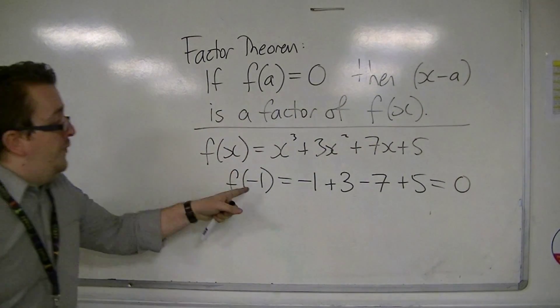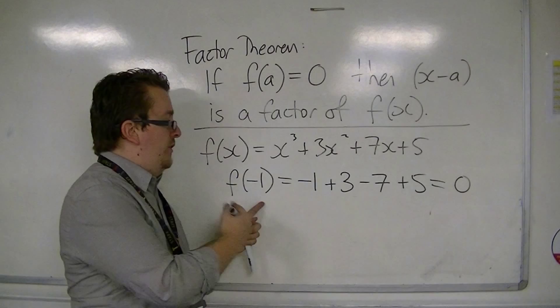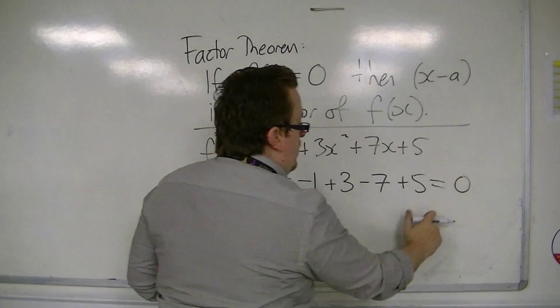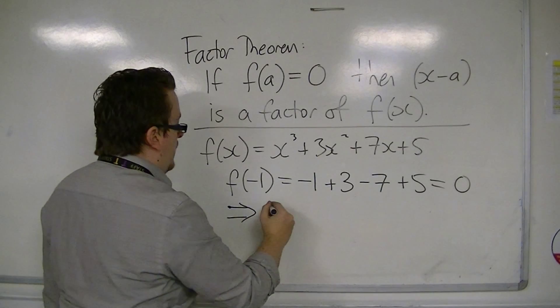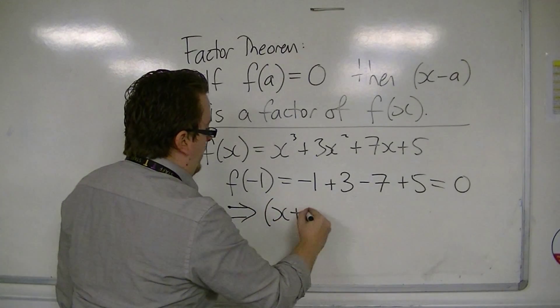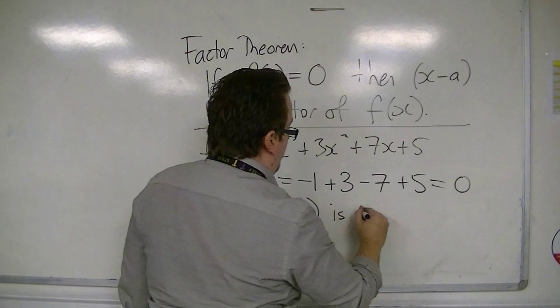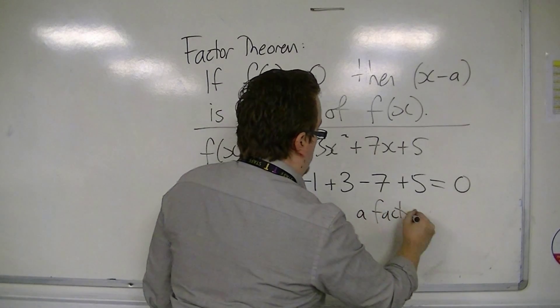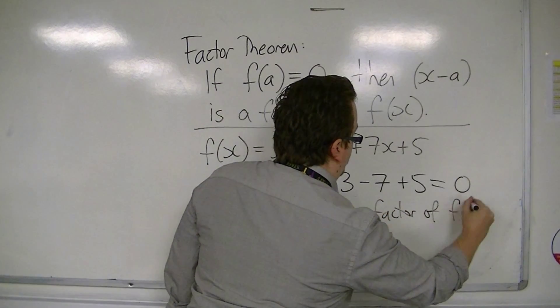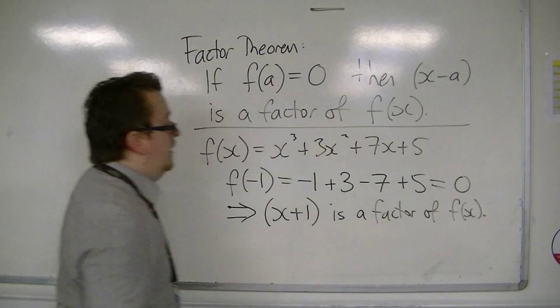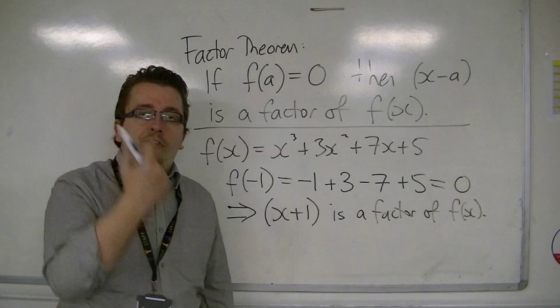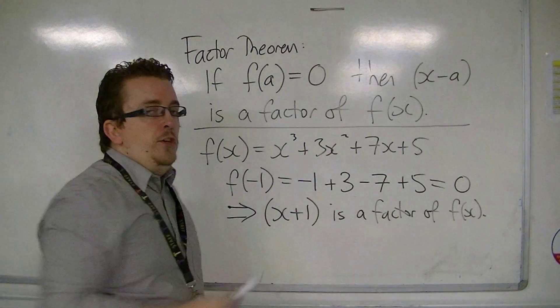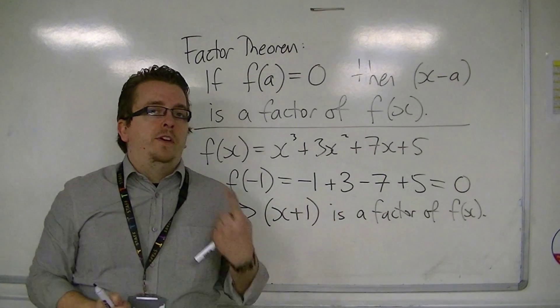So, because when I substitute in minus 1 into the function, I get 0, this implies that x plus 1 is a factor of f of x. So, that means that I am partway there to factorising this cubic, because I've just found a factor.